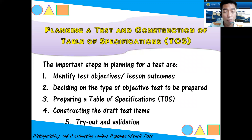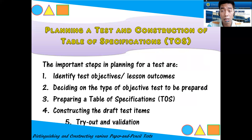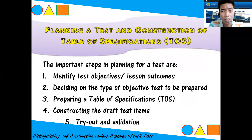Third, prepare a table of specifications, which will be discussed later. Fourth, construct draft test items and conduct tryout and validation. We need to draft test items because some may be too easy or too difficult. That is why we need to try out and validate them — similar to validating survey questionnaires in research.